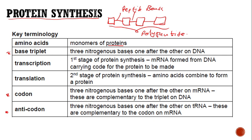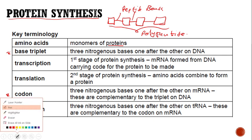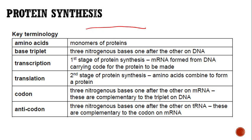A base triplet is three nitrogenous bases one after the other. For example, if I have a DNA strand with A-T-A-G-C-C and triple-A, we can count the base triplets — three nitrogenous bases each. How many base triplets are there? I have one, two, three. These later on will each call for a certain amino acid.